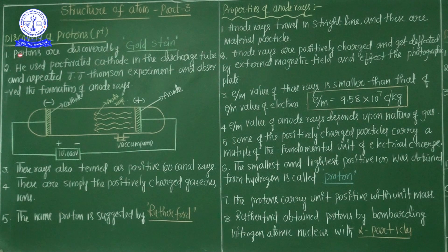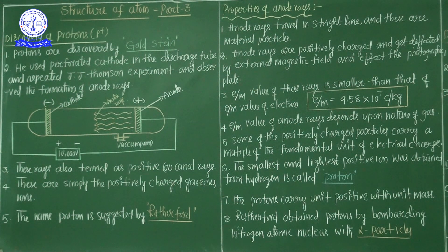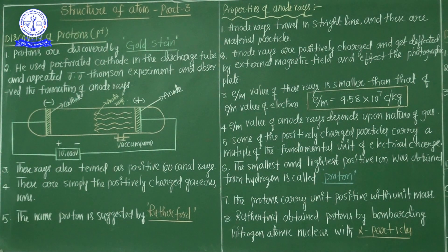Protons were discovered by Goldstein. He used a perforated cathode in the discharge tube and repeated J.J. Thomson's experiment, and observed the formation of anode rays. Goldstein used the discharge tube experiment, but in this discharge tube the terminals and electrodes were changed.